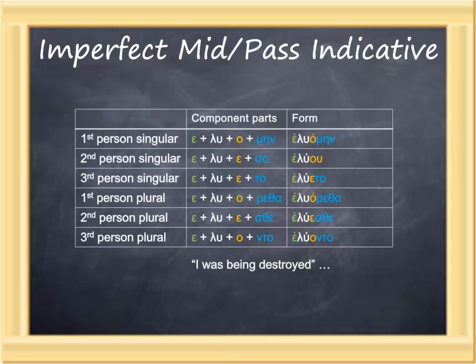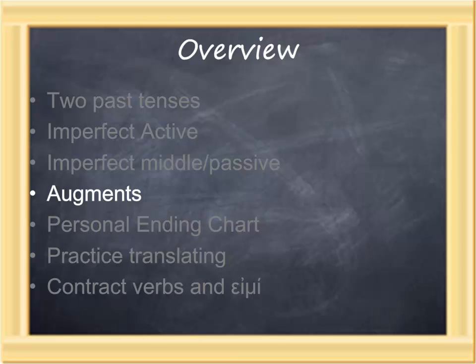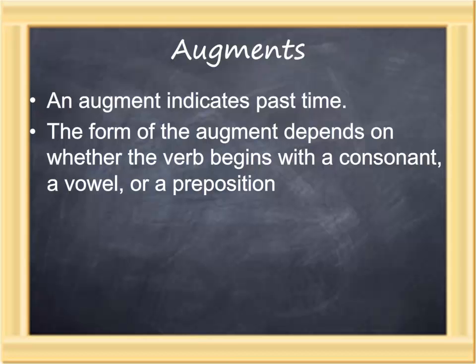We've said all along that one of the identifying marks of the imperfect is an augment. We'll also find augments on aorist forms. The difference, of course, is the stem used: imperfect uses a present stem, aorist uses the aorist stem. But what exactly is an augment? Augments occur on verbs that indicate past times—we'll have augments on imperfects and aorists. The actual form of the augment depends on whether the verb begins with a consonant, a vowel, or a preposition.